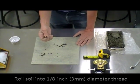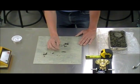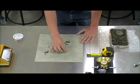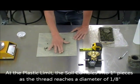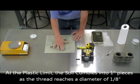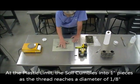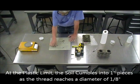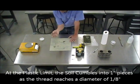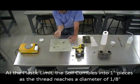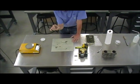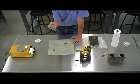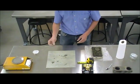If the soil is too dry, it will crumble before it reaches one inch in length. In this case, we're slightly on the wet side so that we're able to actually achieve a length exceeding the inch. And the diameter of this thread is one-eighth of an inch or approximately three millimeters in diameter.